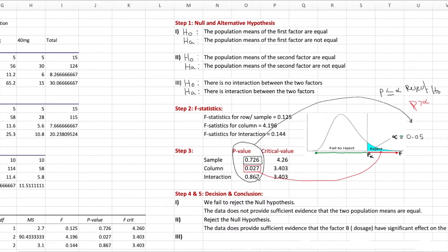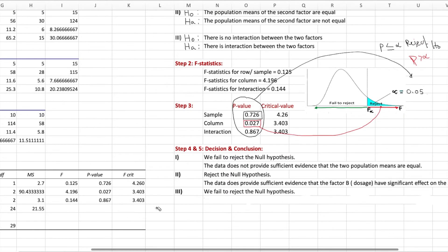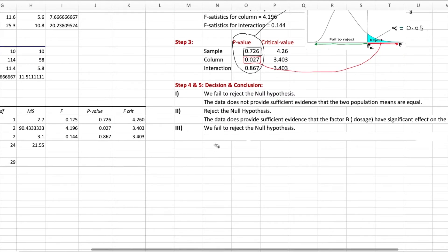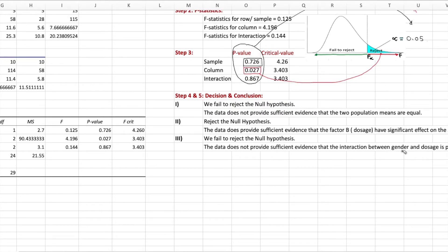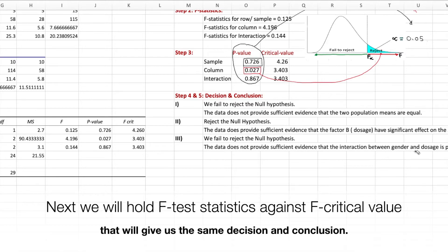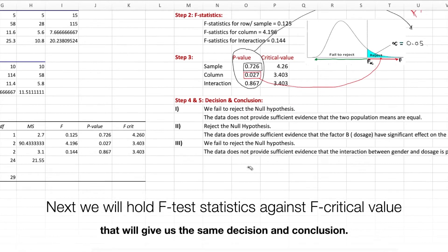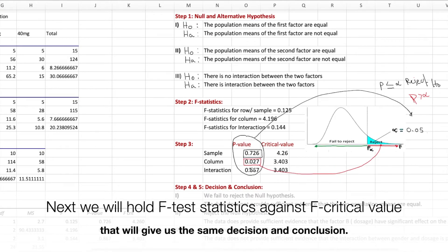For the third hypothesis, the interaction: the p-value is very large, so we fail to reject the null hypothesis. We conclude that the data does not provide sufficient evidence that there is an interaction between gender and drug doses. That is how we conclude the hypothesis test using the p-value approach.